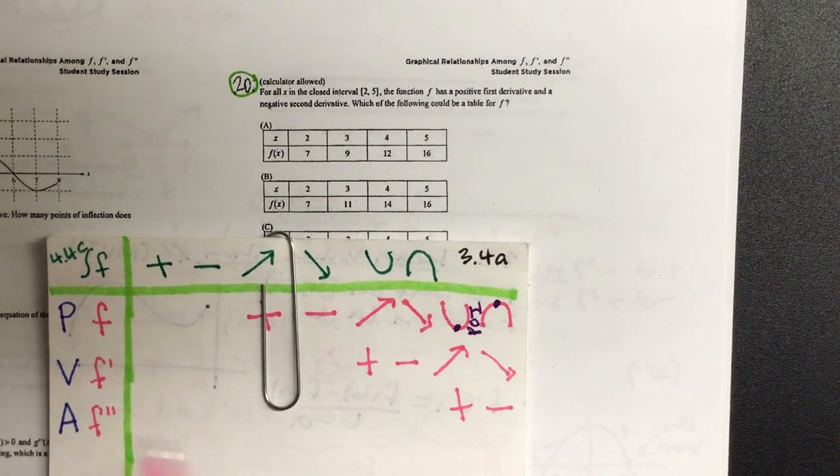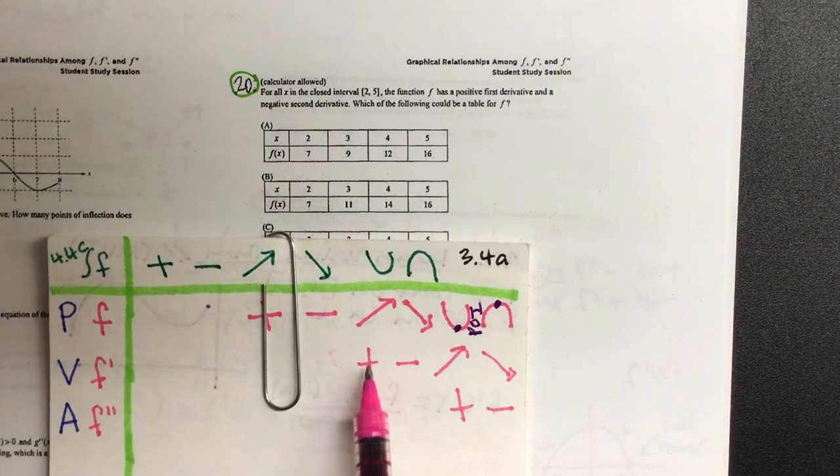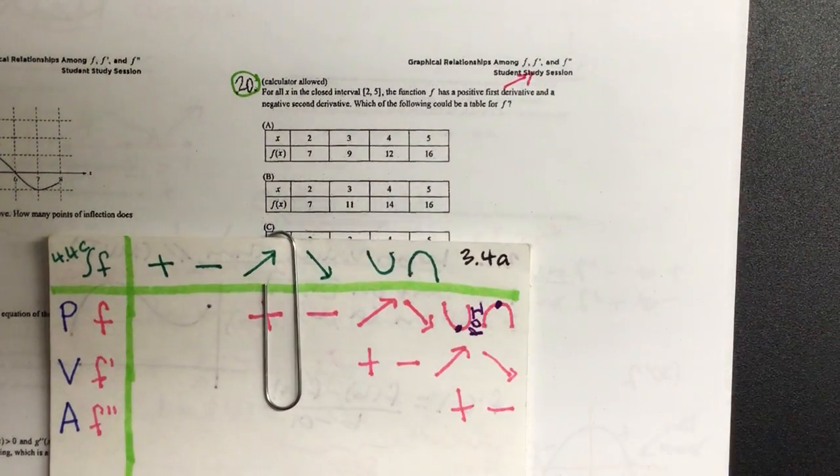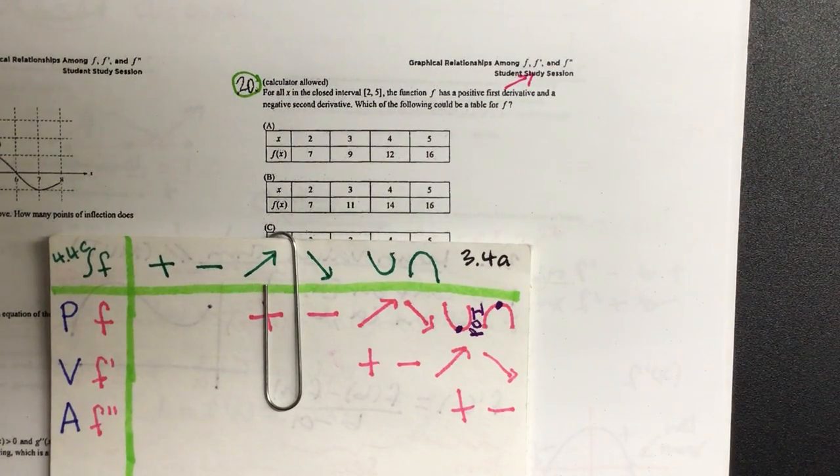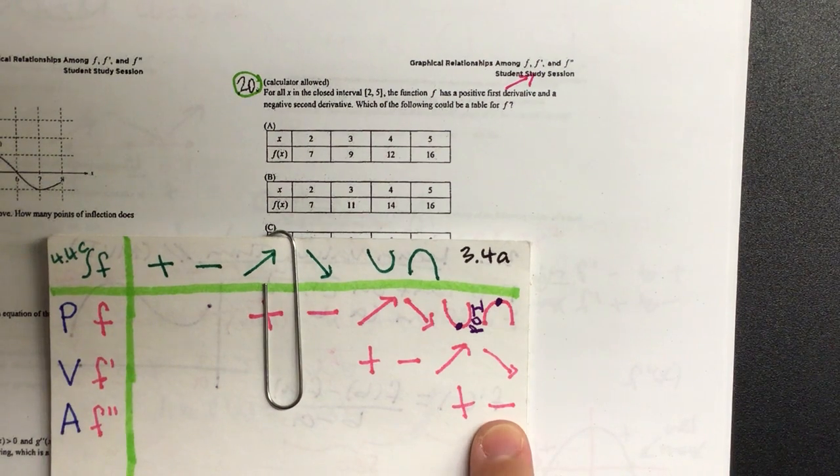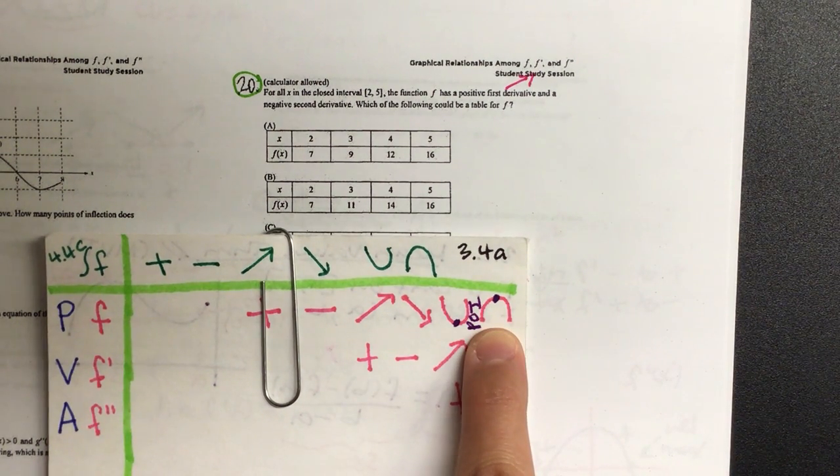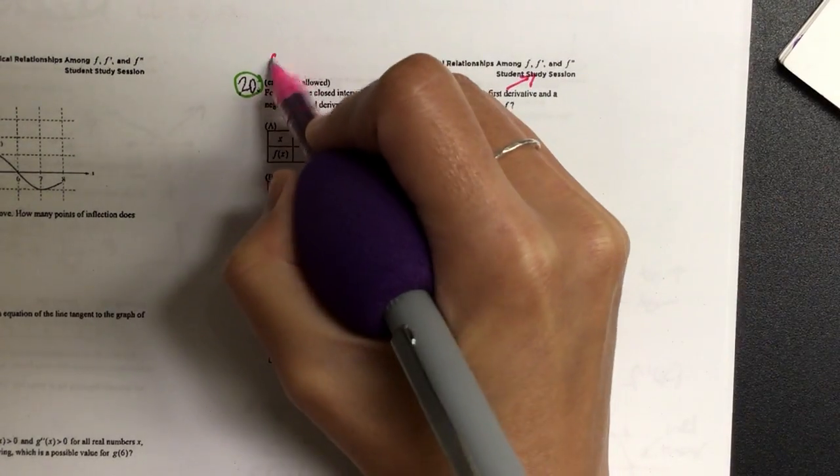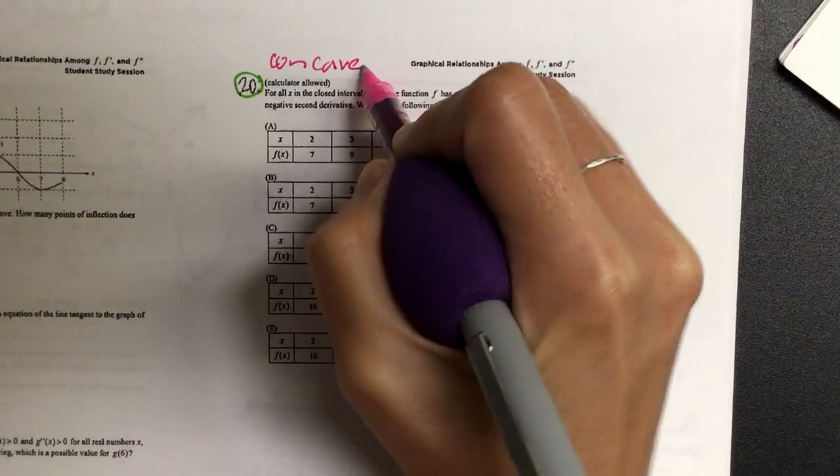So if I have a positive first derivative, my first derivative being positive means it's increasing, so the graph is going up. And if the second derivative is negative, here's my negative second derivative, concave up or down? Concave down. So let's put on here, it's going to be concave down.